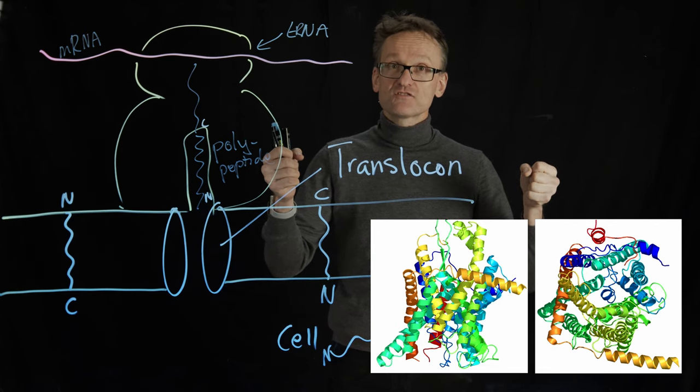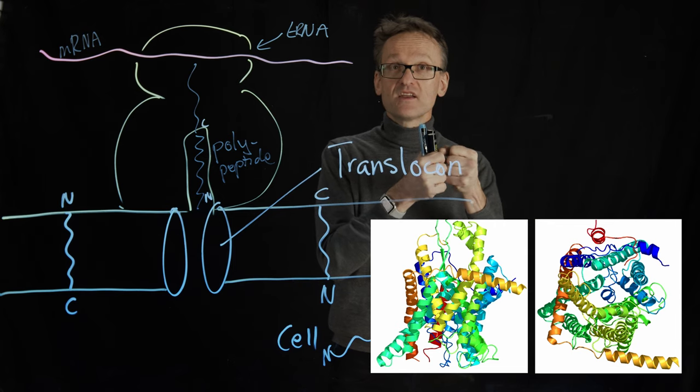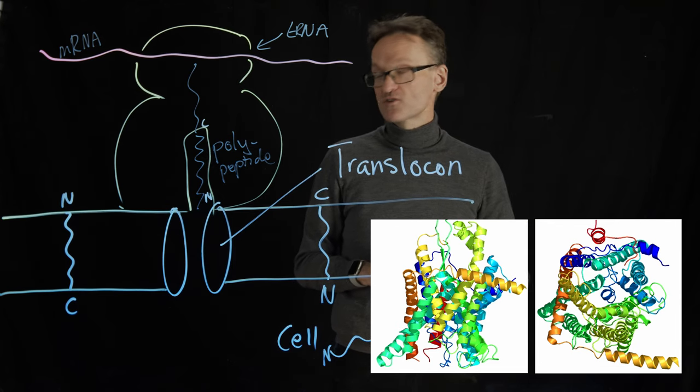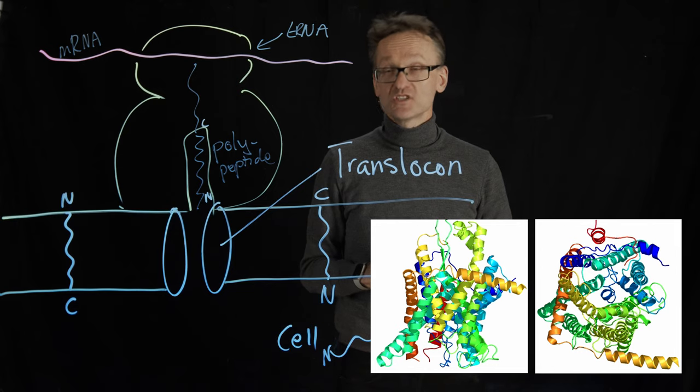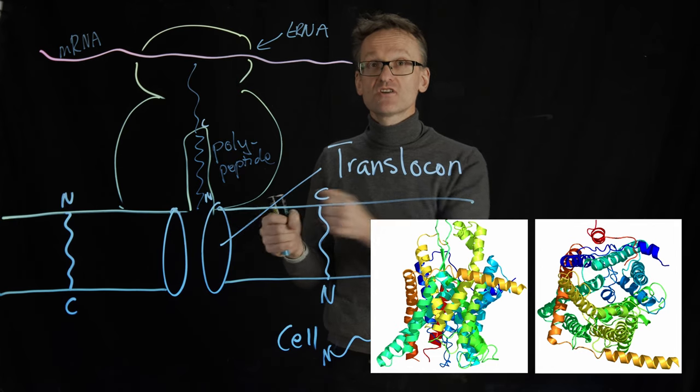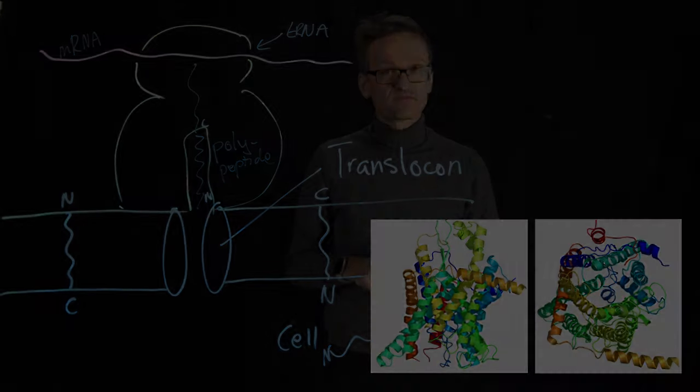So apparently, the two halves must have diffused around in the membrane and found each other. So that's occasionally called the Popot-Engelman two-stage model. First, insertion and then diffusion and then association to find each other.